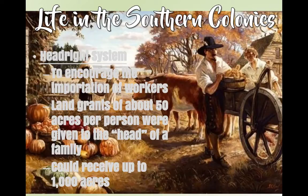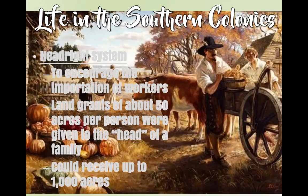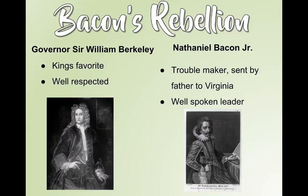Something else about the 13 colonies would be the headright system, which was to encourage the importation of workers. Basically, you would get 50 acres of land given to the head of a family. You could even receive up to a thousand acres just for coming and working in the colonies. That was the incentive: come and work and you will get land. Remember, England is only an island with only so much land, but America is kind of endless and abundant at this point.